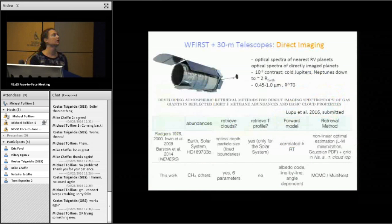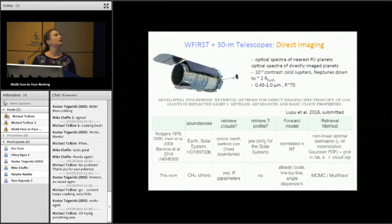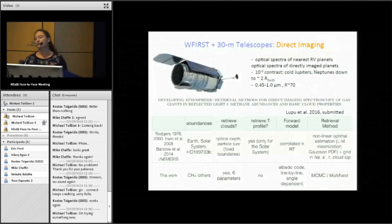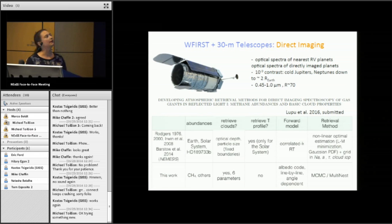So what I've been working on was developing a retrieval scheme to be used with WFIRST and maybe later for 30-meter telescopes that will try to characterize cold gas giants in reflected light. Basically, we think that WFIRST will be able to give us optical near-infrared spectra of a handful of nearby RV planets, and it will reach a contrast of 10 to the minus 9.